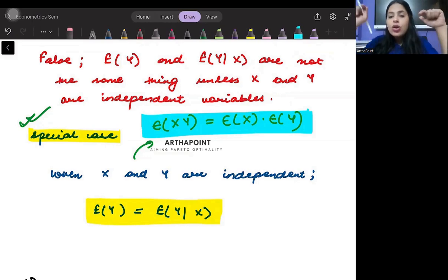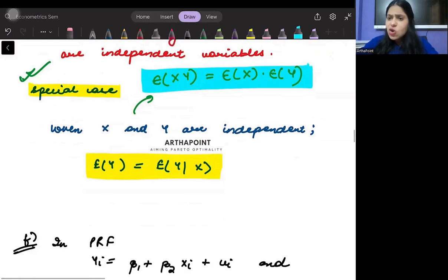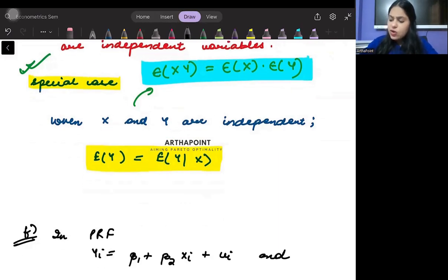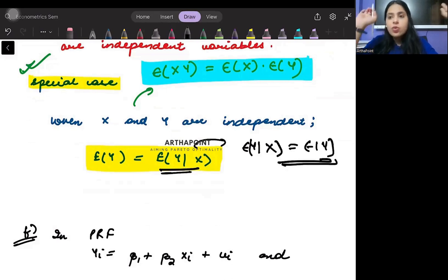If this is the case, only in that case you will notice that E of Y and E of Y given X will be equal to each other. Because Y is not dependent on the value of X. So given that X has happened, the expected value of Y will simply be equal to the expected value of Y.